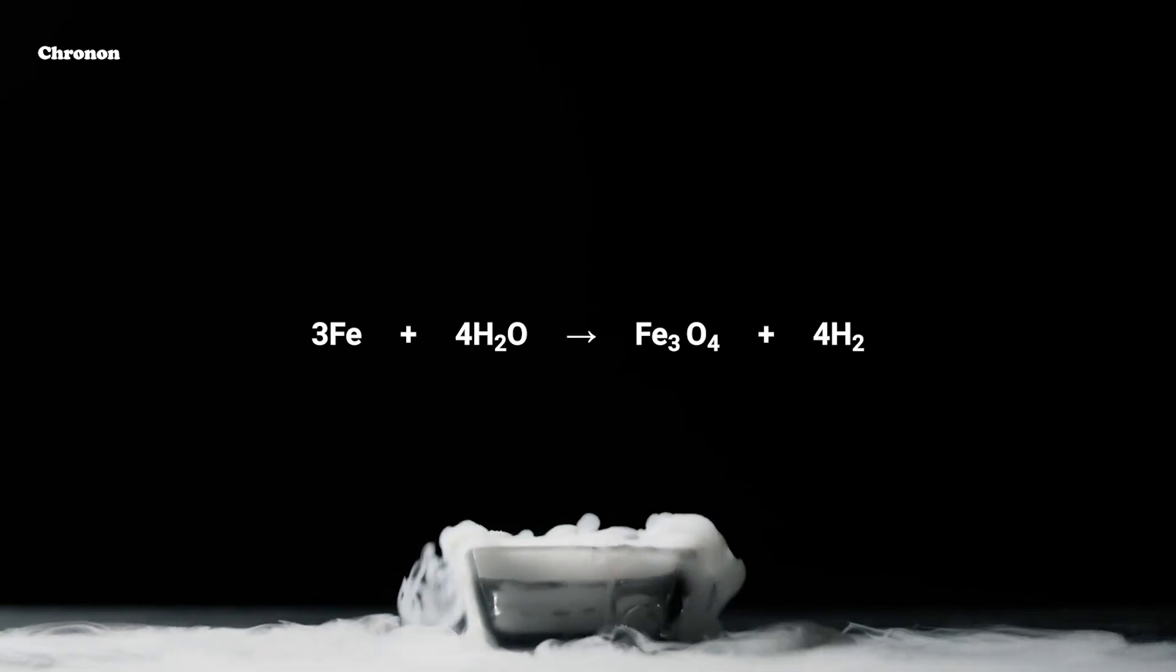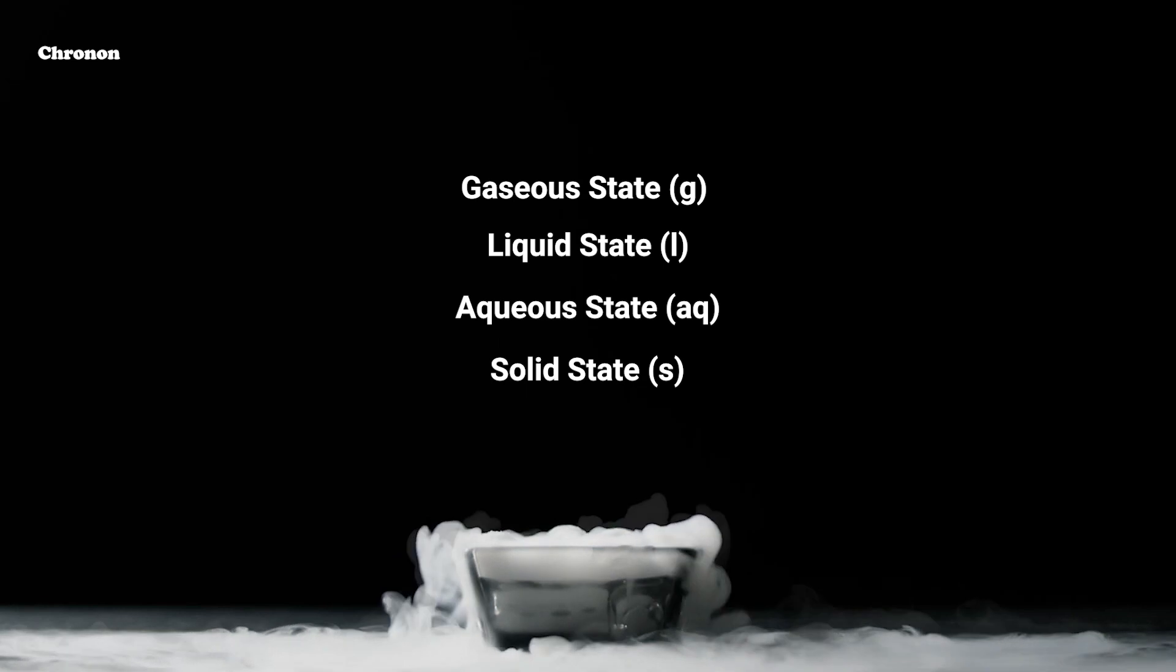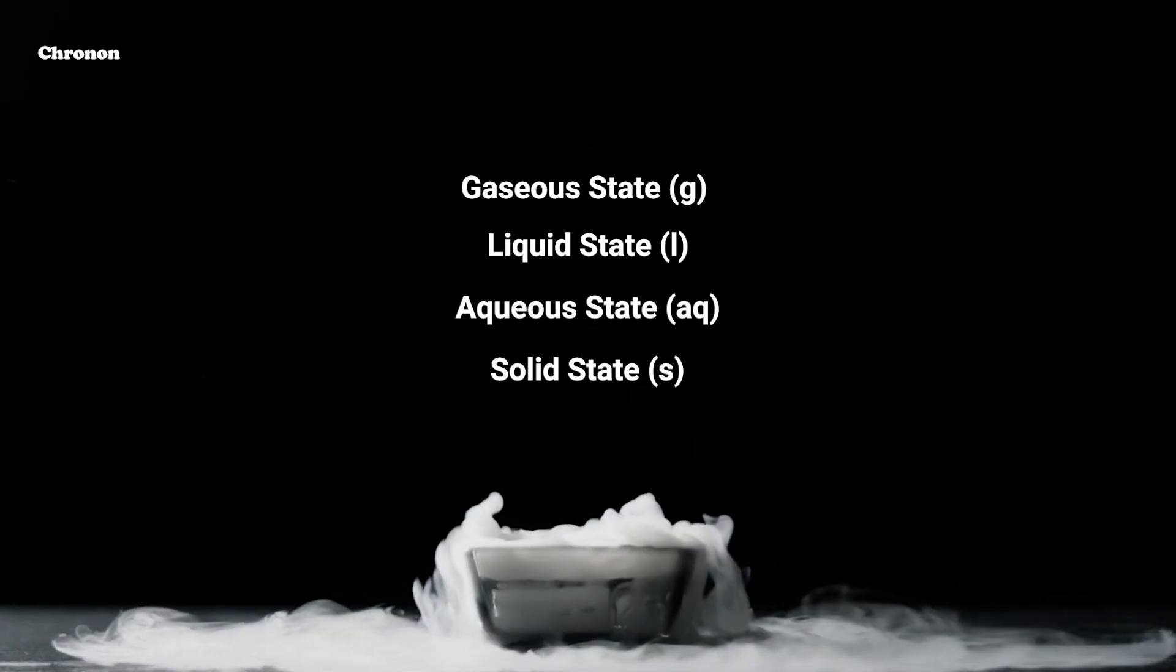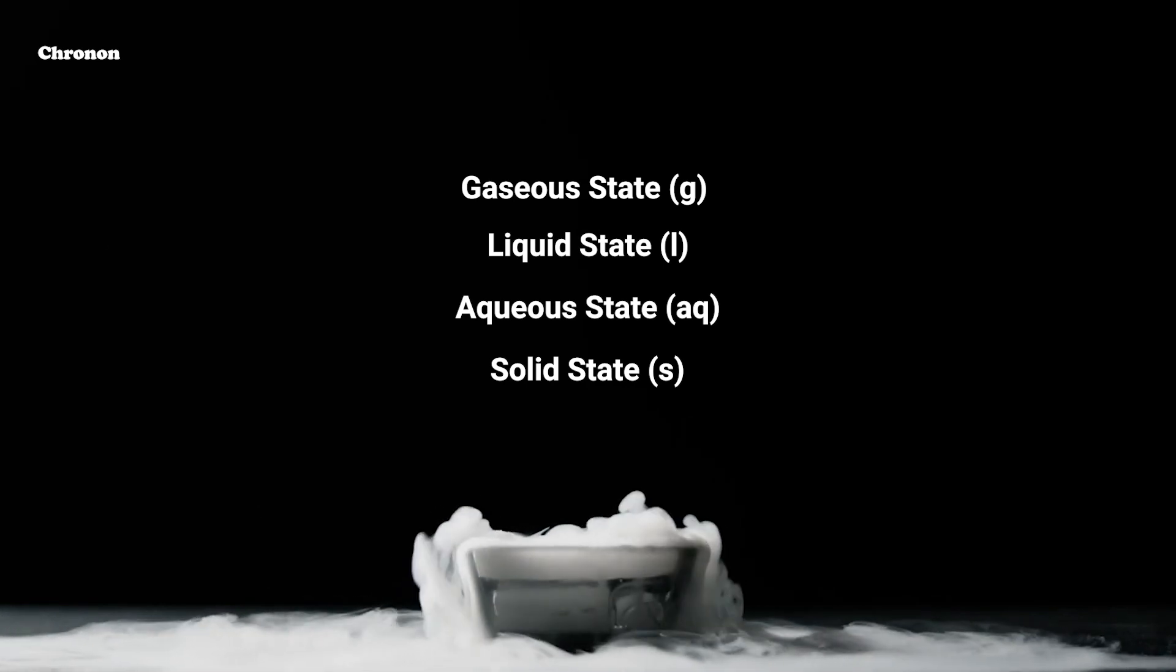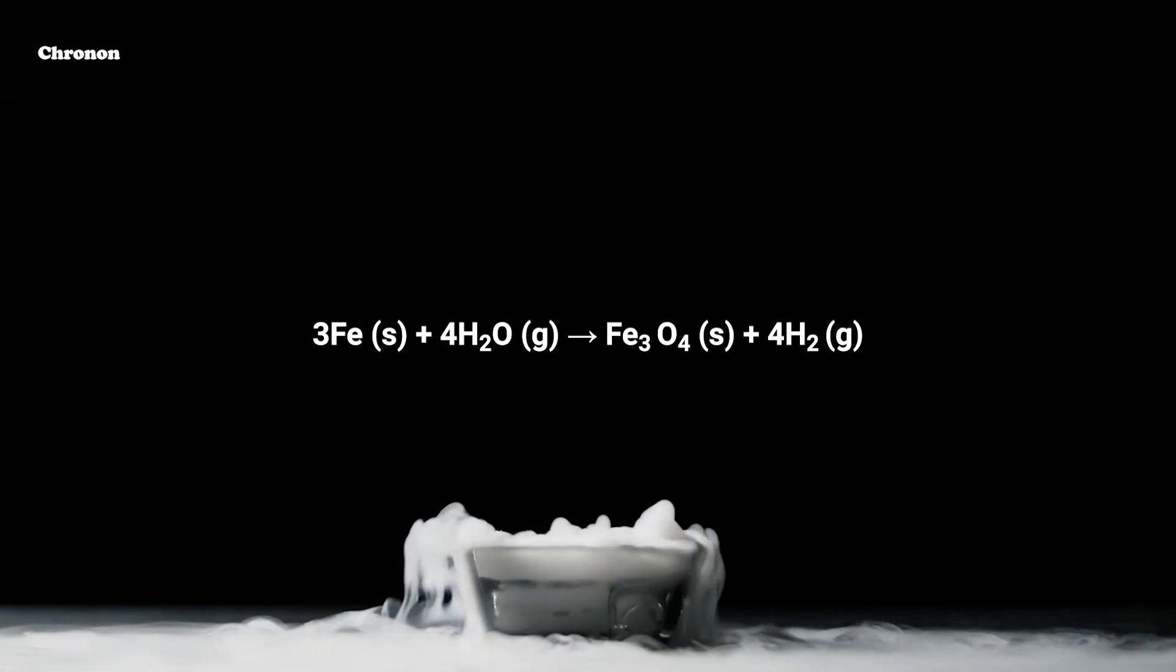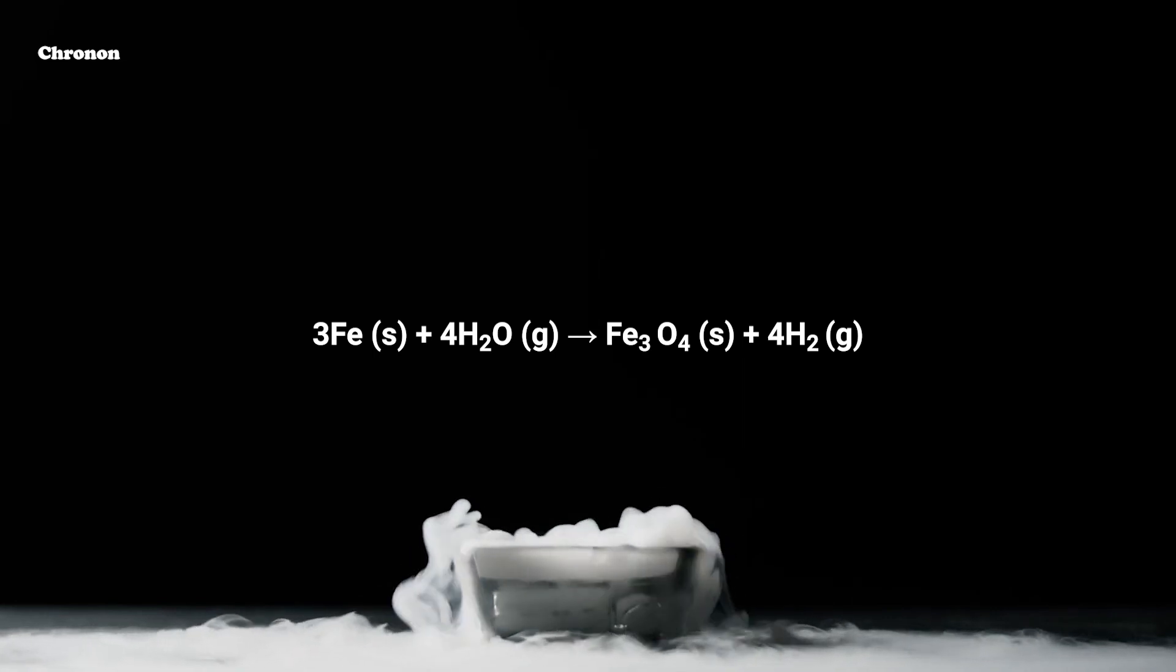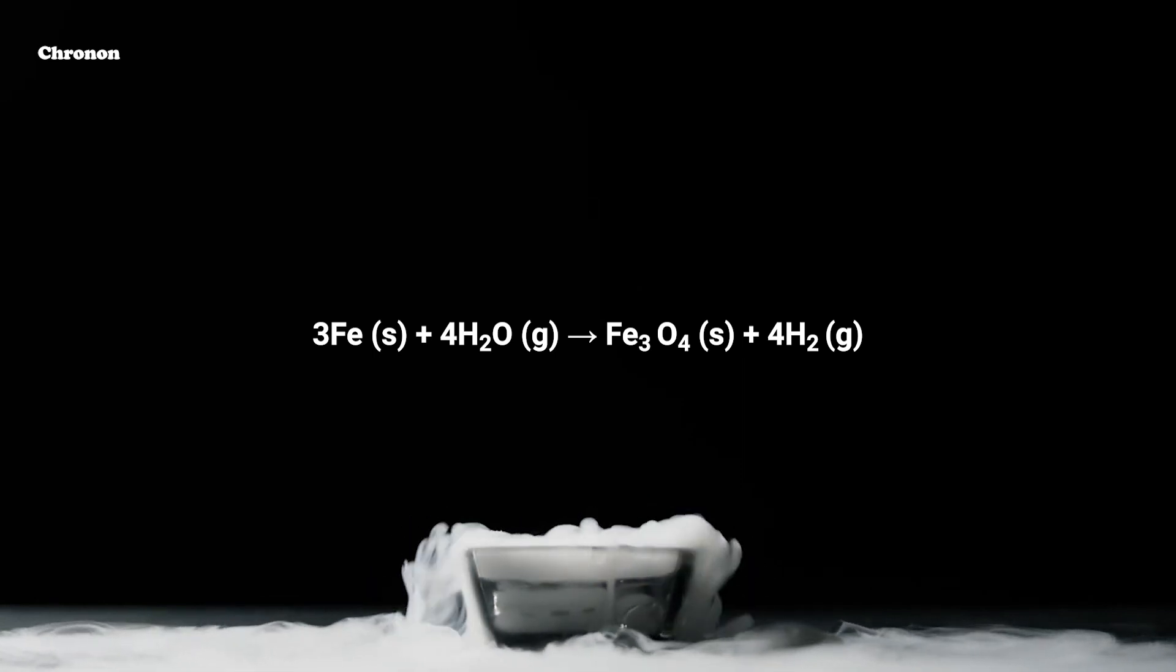The gaseous, liquid, aqueous and solid states of reactants and products are represented by the notations G, L, Aq and S respectively. The word aqueous is written if the reactant or product is represented in a solution in water. Now the balanced chemical equation becomes 3Fe in solid state, 4H2O in gaseous state producing Fe3O4 in solid state, 4H2 in gaseous state.